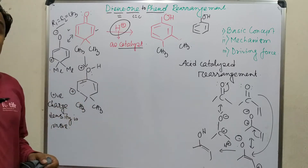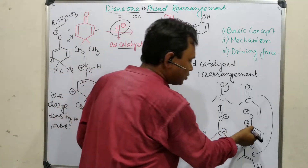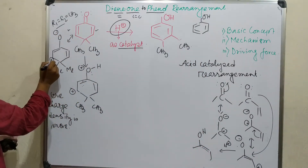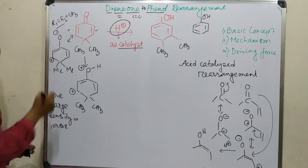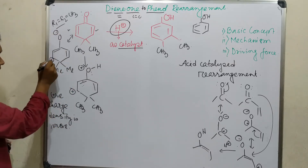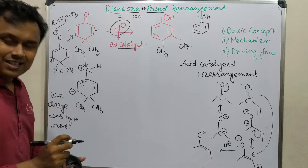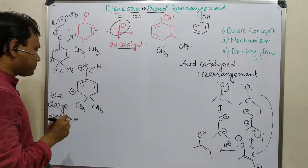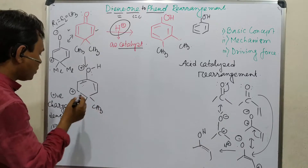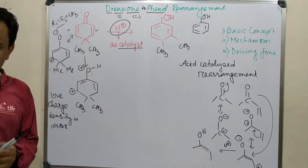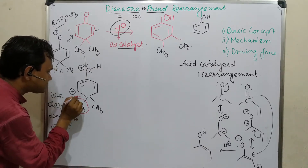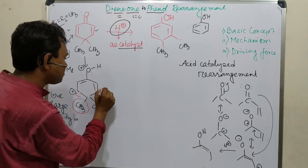Because of protonation, the carbonyl group has its canonical form so the positive charge can come here on this carbon. Because of this, the methyl group cannot migrate before protonation because the positive charge density on that carbon is less compared to after protonation. That is the reason protonation is essential — otherwise electron deficiency will be less and migration will not be easy. Consequently, this methyl group can migrate here.